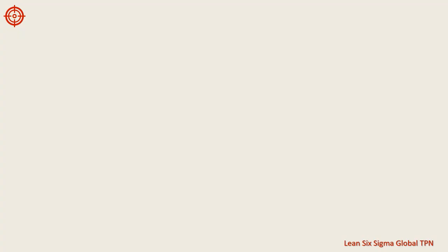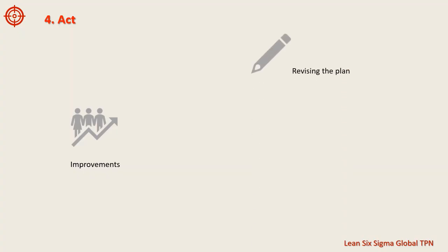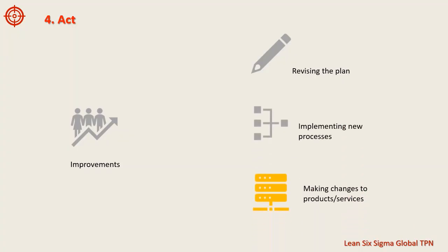The fourth and final step of the PDCA cycle is Act. In this step, you make changes and improvements based on what was learned from the Check step. This could include revising the plan, implementing new processes or systems, or making changes to products or services.